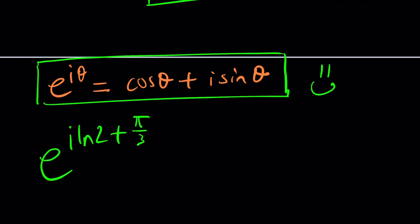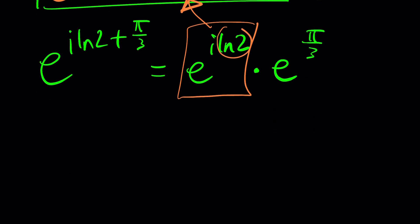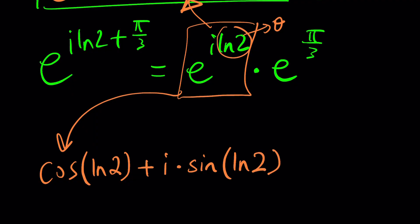Now one thing we should do is first of all separate the real and imaginary parts so let's go ahead and separate them e to the power i ln 2 times e to the power pi over 3. Here's the part you should focus on because this is where you apply Euler's formula. In this case theta is ln 2 so e to the power i ln 2 will be cosine of ln 2 plus i times sine of ln 2 but this should be multiplied by e to the power pi over 3.